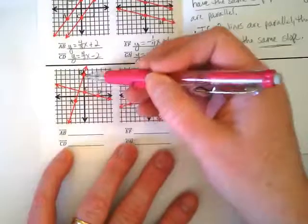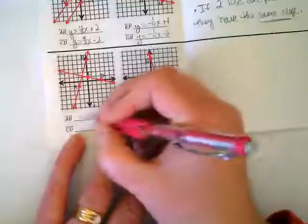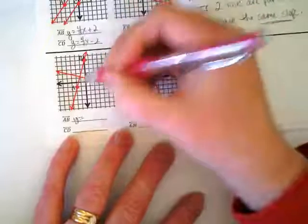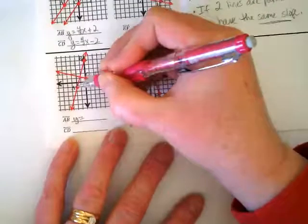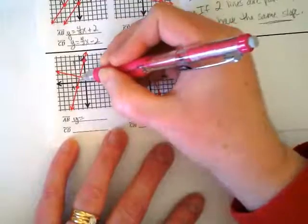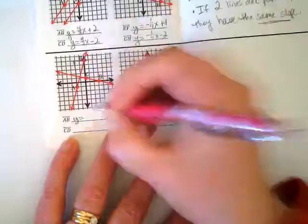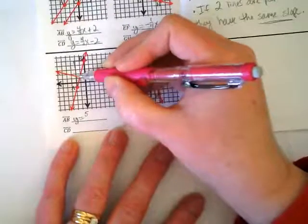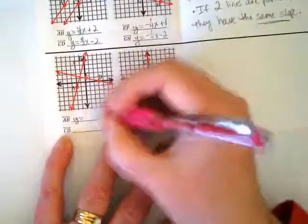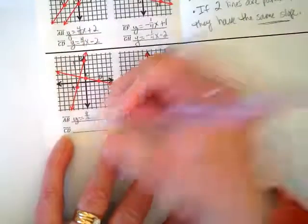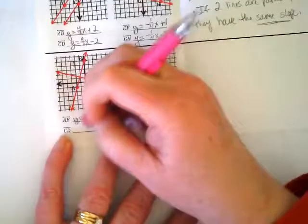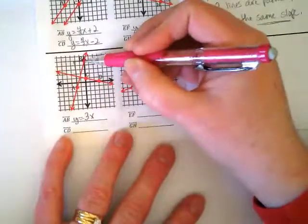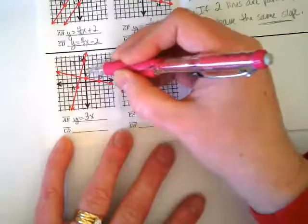Let's look at line AB. I'm going to write y equals, then think about whether the slope is positive or negative — it's positive. Finding the rise over run between points A and B: the rise is up six and it runs across two, so slope is 6/2 which equals three. The equation is y = 3x plus the y-intercept, which is positive five.